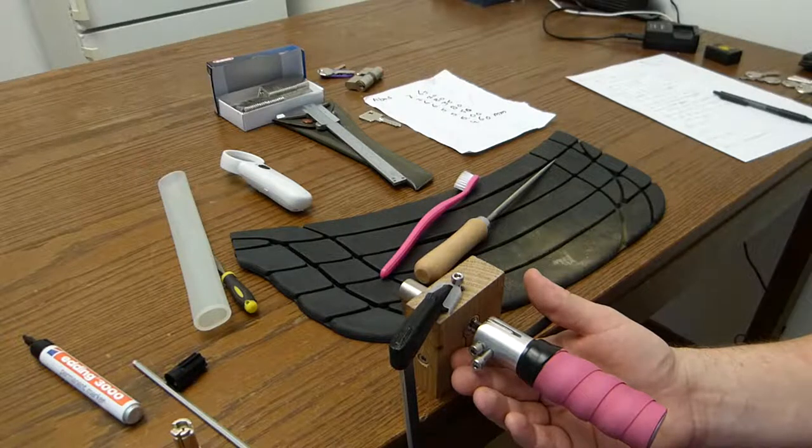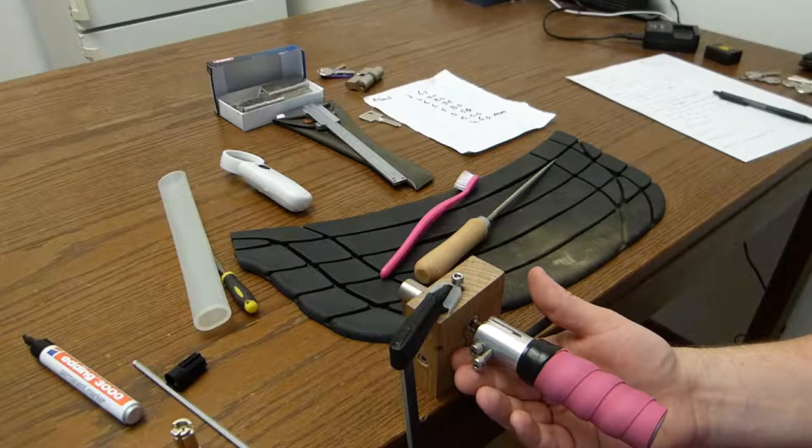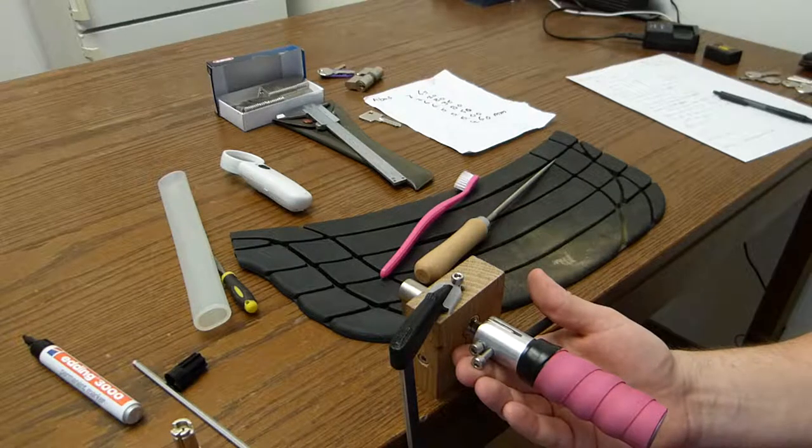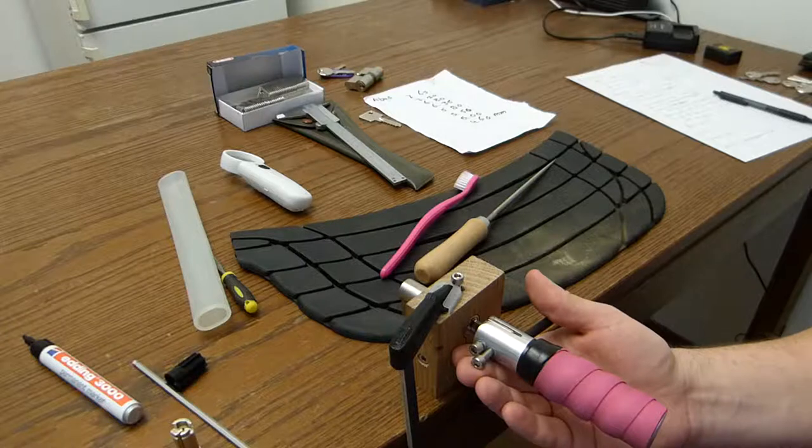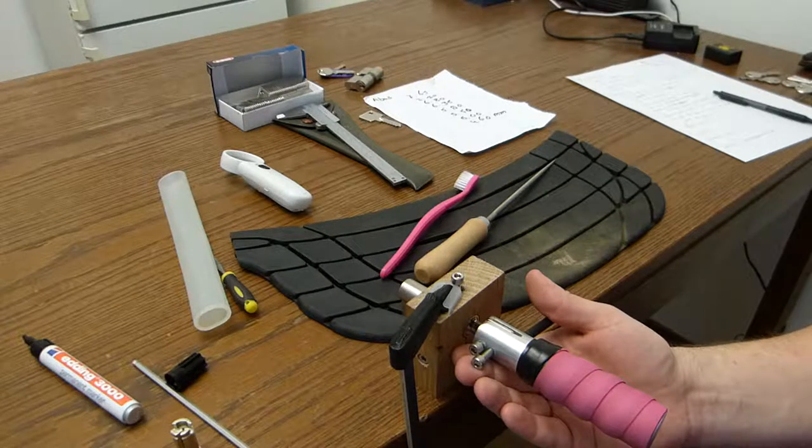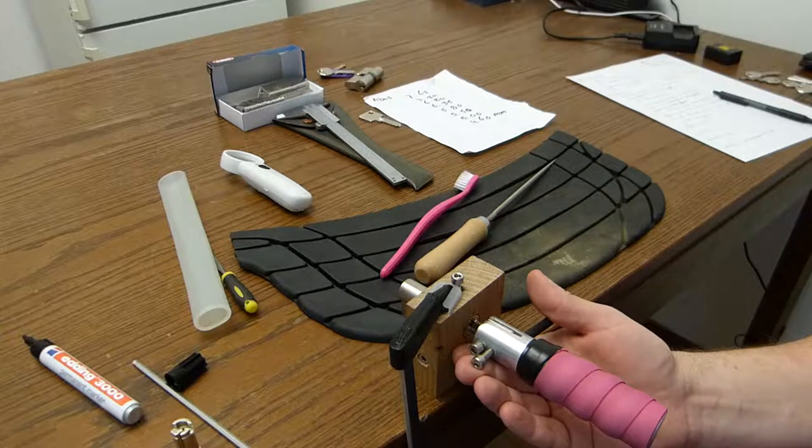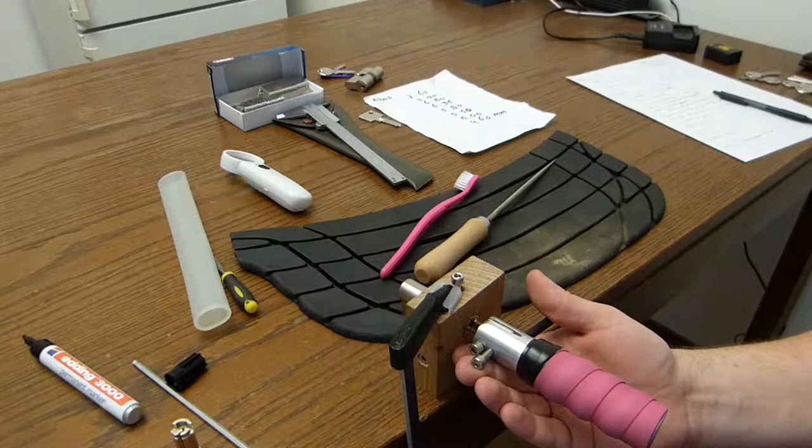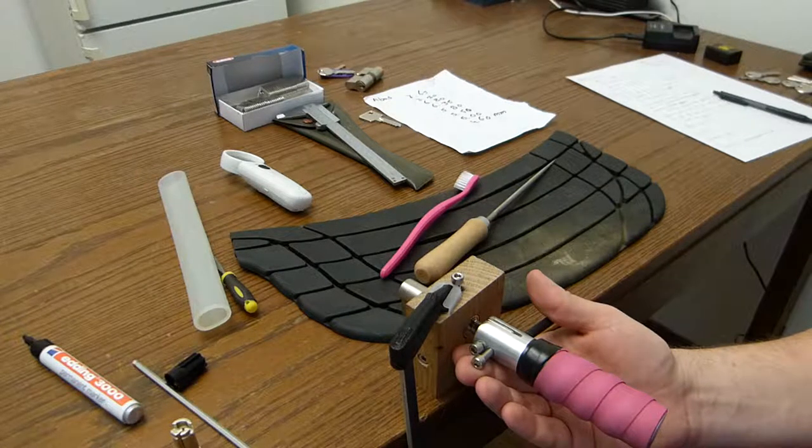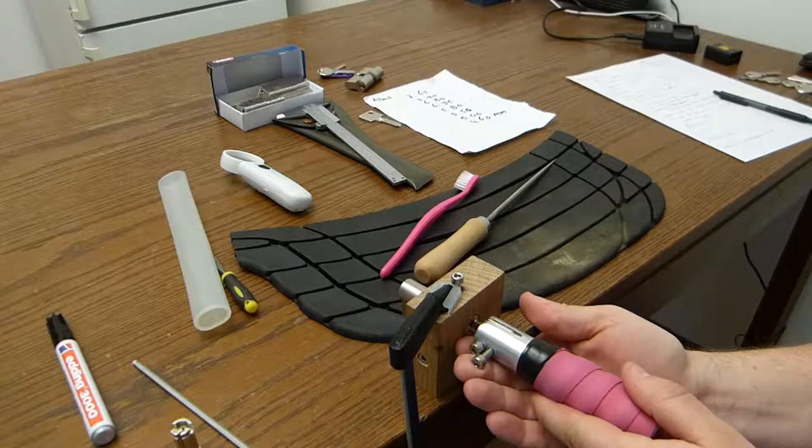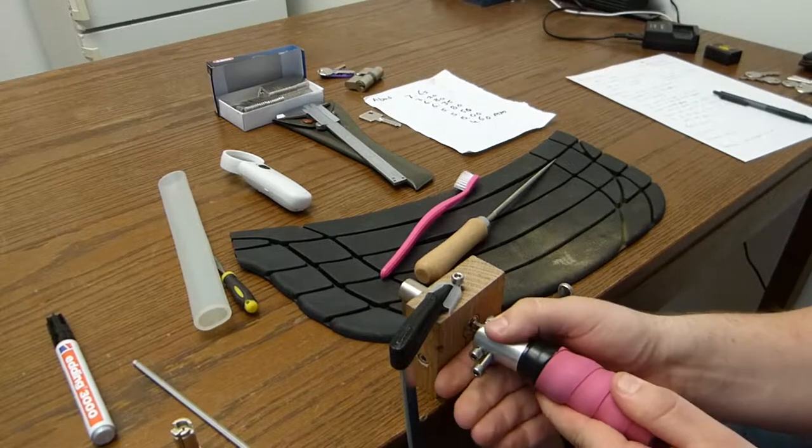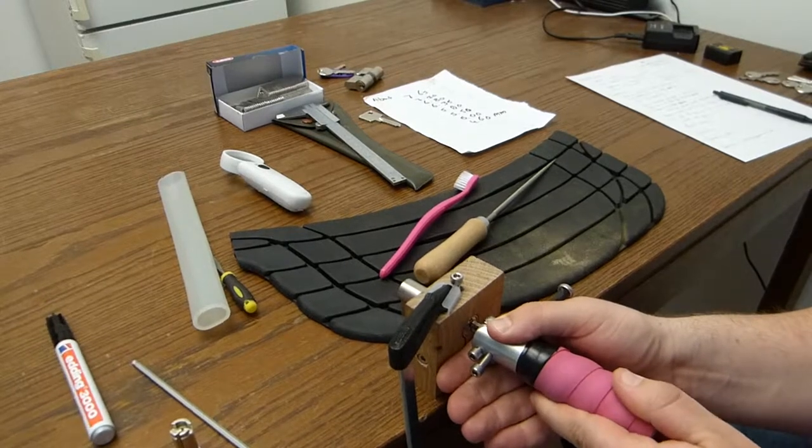And just like picking, we want the key pins to bind up. For picking, we want very light tension. For impressioning, it's as much tension, as much torque as you can get without breaking the key. But you have to get used to it. Because the key pins bind, they leave marks in the brass blank.